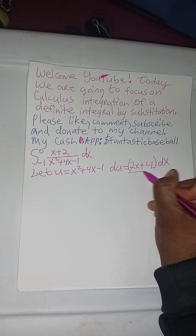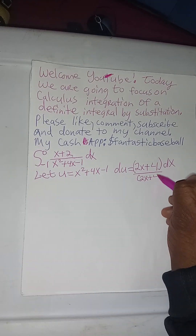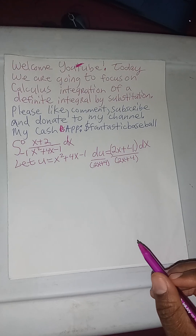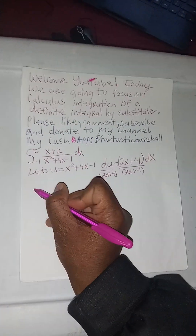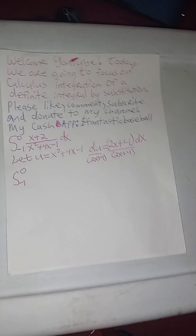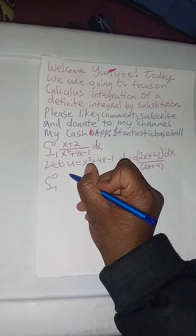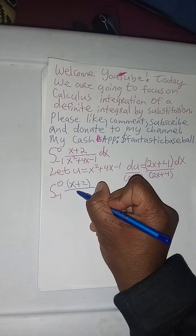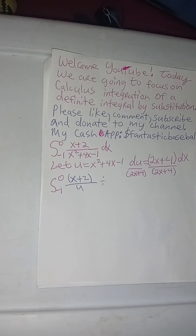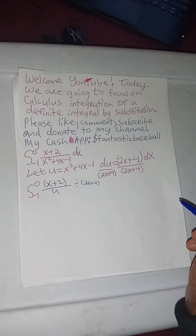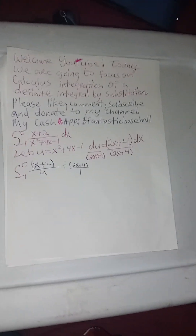And then we want to divide both sides by 2x plus 4. Now the problem will read the integral from negative 1 to 0 of x plus 2 divided by u, divided by 2x plus 4. We want to make this a fraction, divide that by 1, multiply by the reciprocal, and then du.